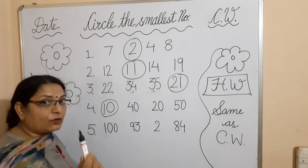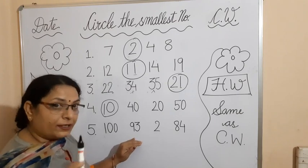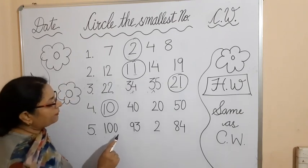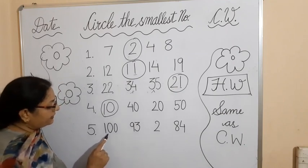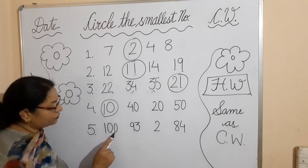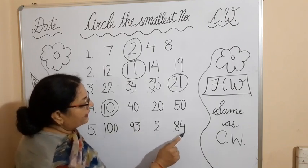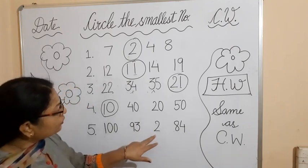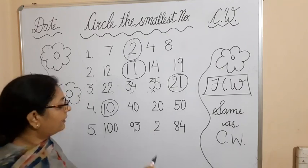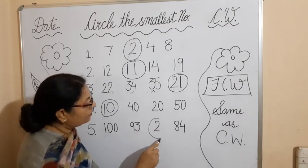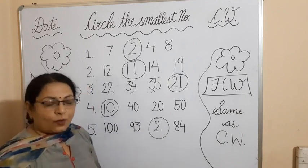For the fifth example, first compare the digits — whether they are single digit or double digit. Here we also have three digits: 100, then 93, 2, and 84. Now 2 is a single digit. A single digit is always the smallest number — it is always the smaller number. So 2 is the smallest number. Is it clear, students?